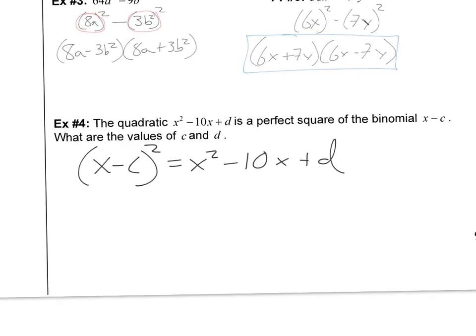So we should be able to quickly see what's going to happen here. If this is a perfect square, we know what this is. It's really x² plus 2 times negative 5 times x, plus d is going to be the last term squared, so let's just call it c². So now we can see, obviously those are the same, these are the same, and these are the same.